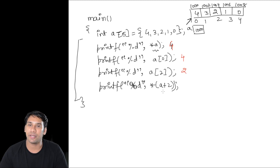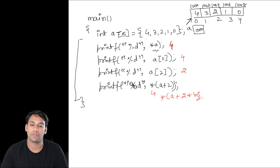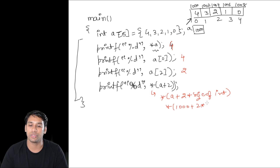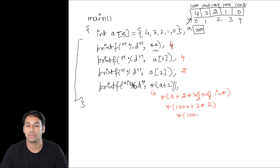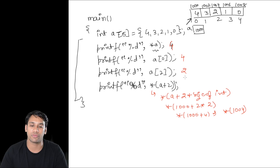Now in the fourth statement, *(a + 2) is equivalent to *(a + 2 * sizeof(int)), which is equivalent to *(1000 + 2 * 2) = *(1000 + 4) = *(1004). That means I am going to print the value stored at location 1004, therefore it is going to print 2.